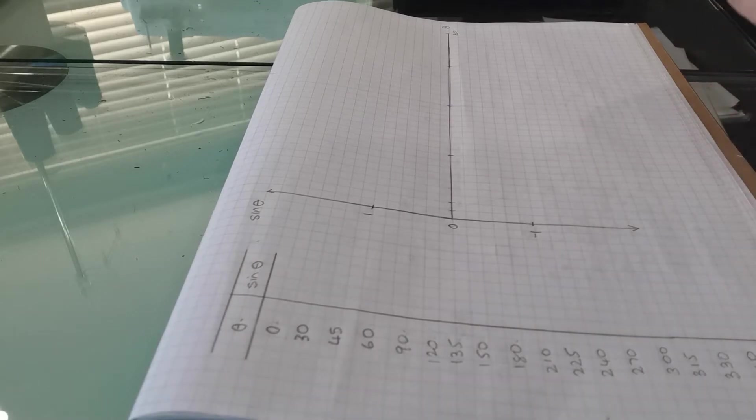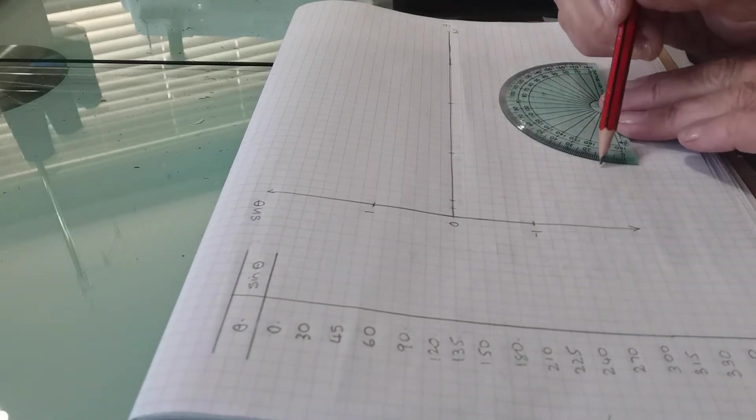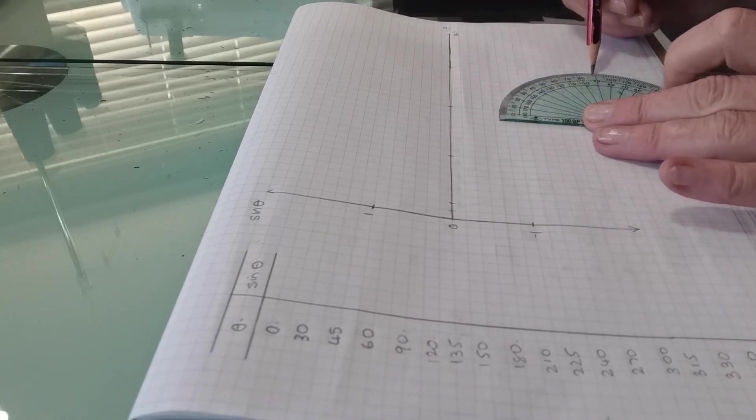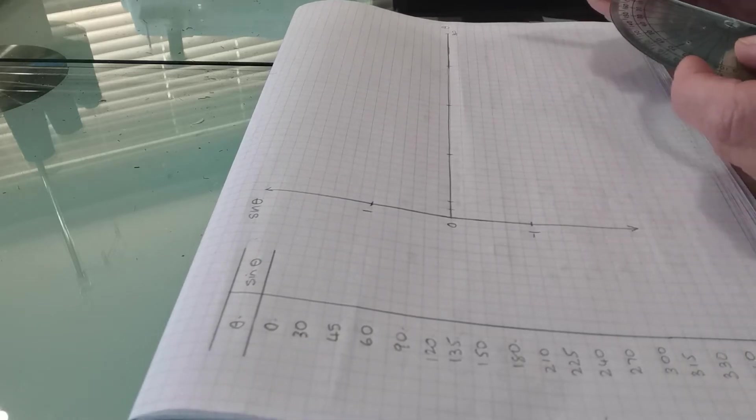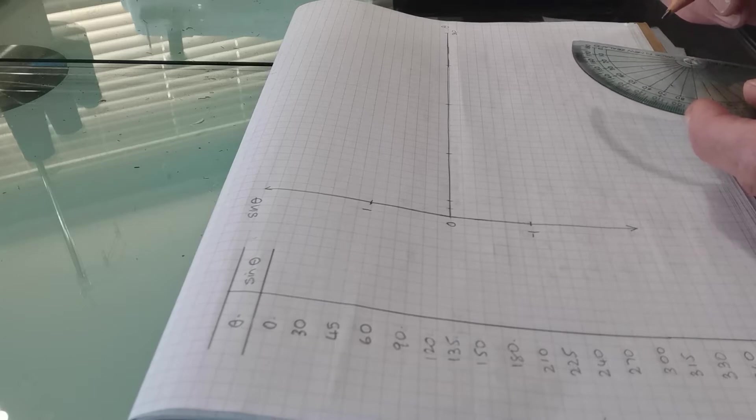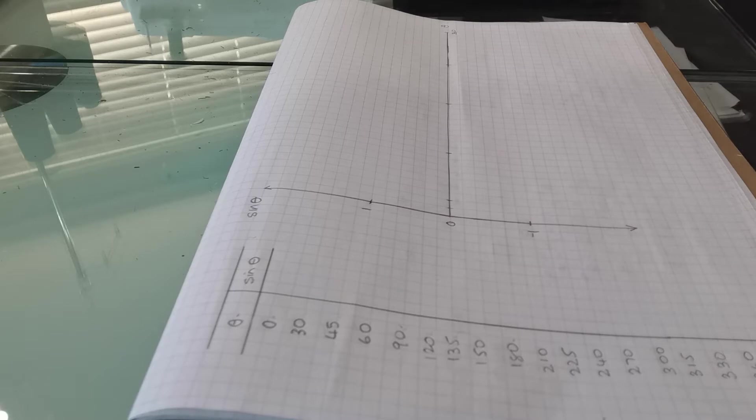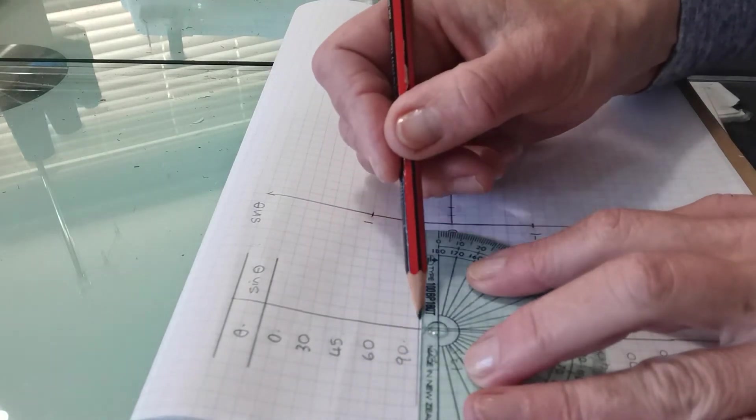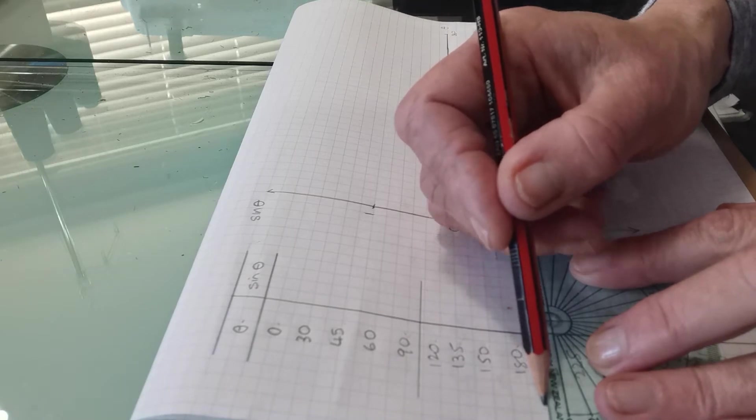So we're going to draw the full revolution of a circle, a unit circle. So we start off with zero to 90 degrees is the first quadrant and then 90 to 180 is the second quadrant and then 180 to 270 and 270 to 360. So you'll see the pattern of these quadrants as you draw the graph and there they are like so.